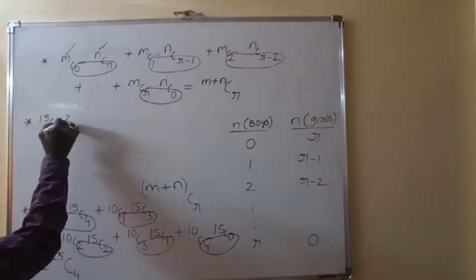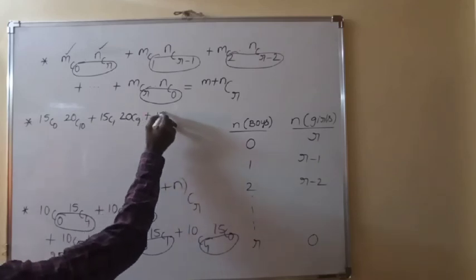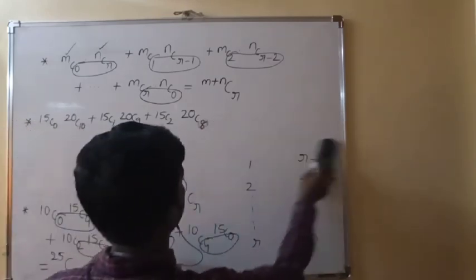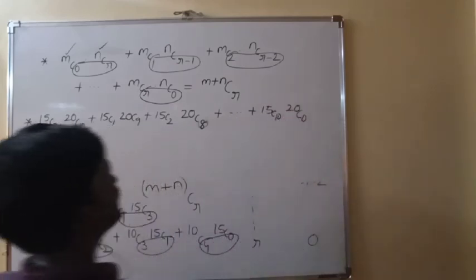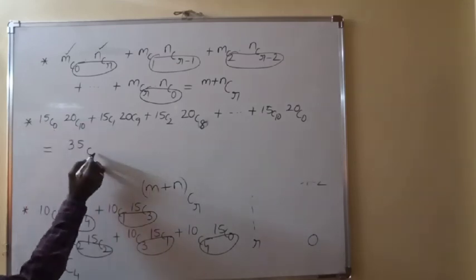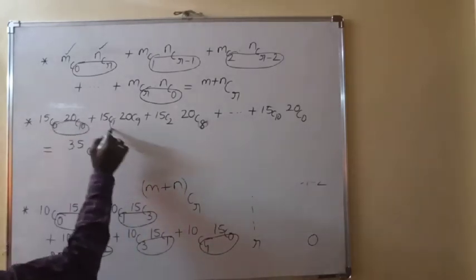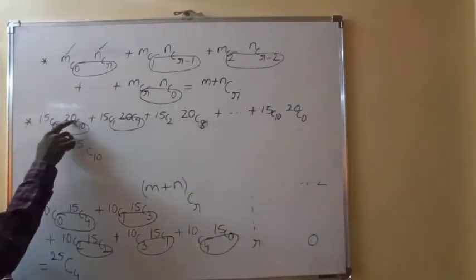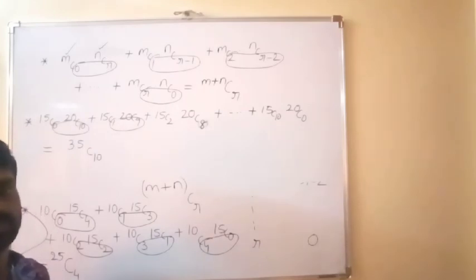One more example: 15C0·20C10 + 15C1·20C9 + 15C2·20C8 + ... + 15C10·20C0. In each term, the sum of subscripts is 10 (e.g., 0+10, 1+9, 2+8, ..., 10+0). The tops add to 15+20 = 35. So the answer is 35C10.